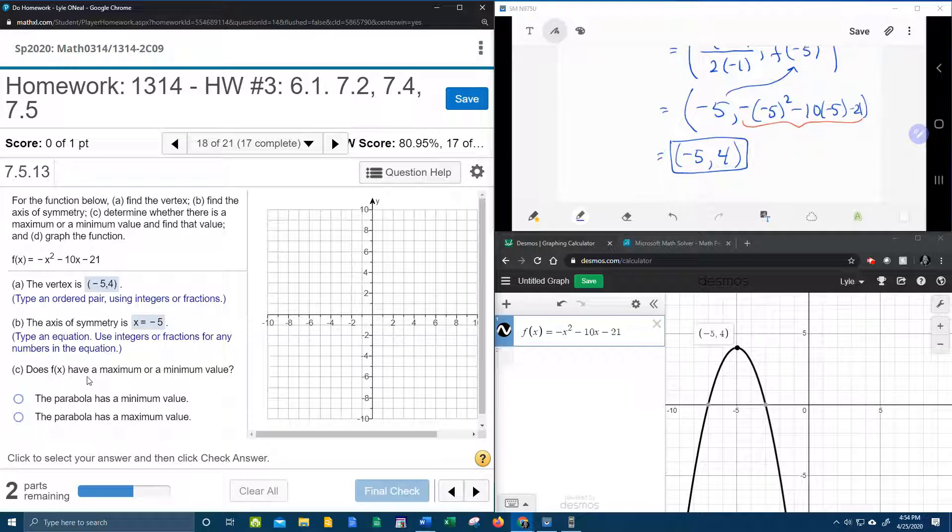Part C, does f(x) have a maximum or a minimum? Well, there's two ways we can answer that question. First of all, if you look over here in Desmos, we can see that this vertex is the highest point. So that means that this is going to be a maximum. But we can also tell that from the value of a.